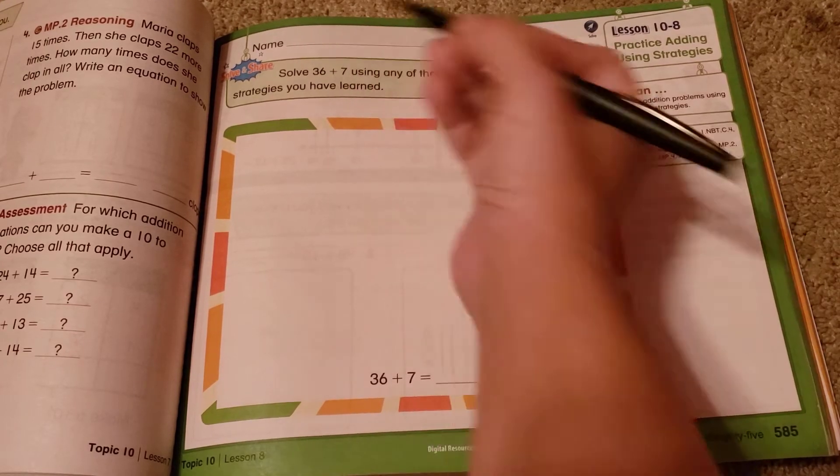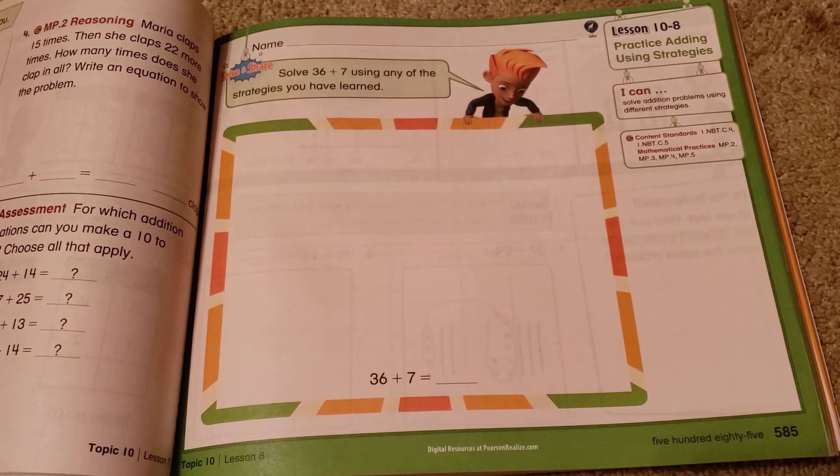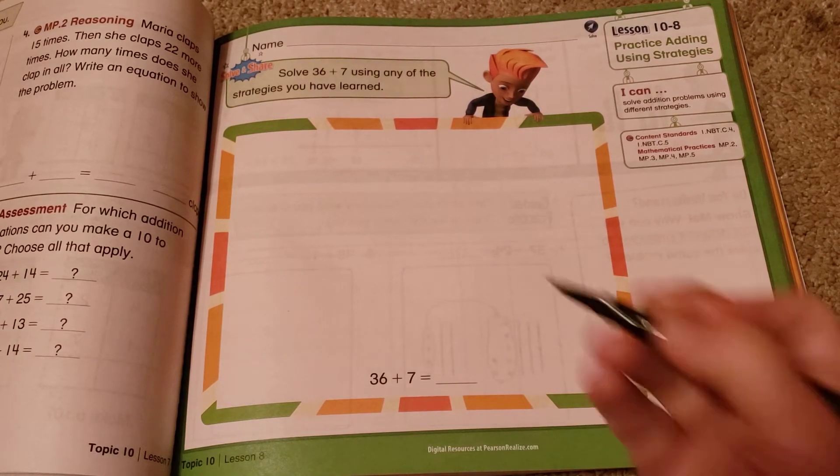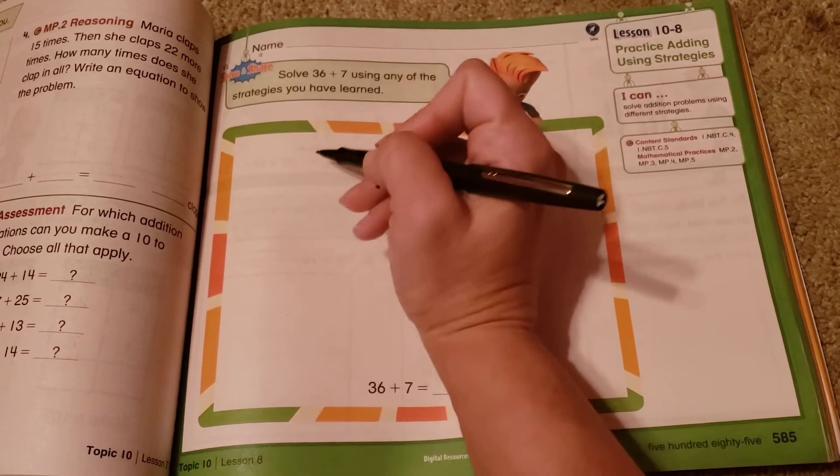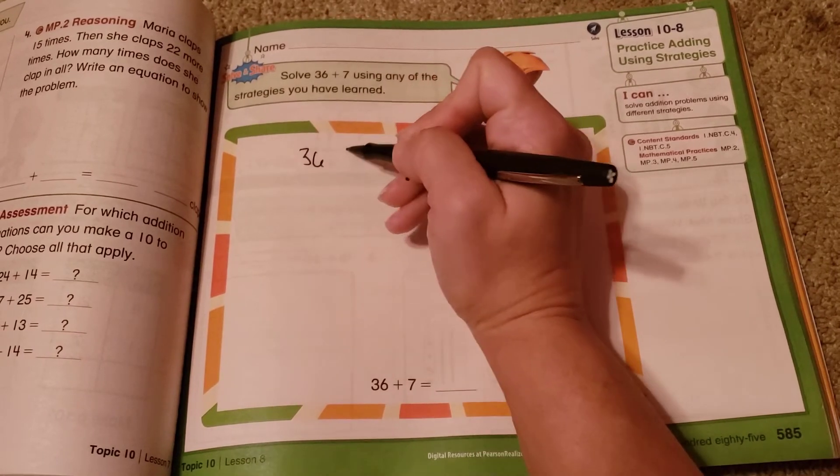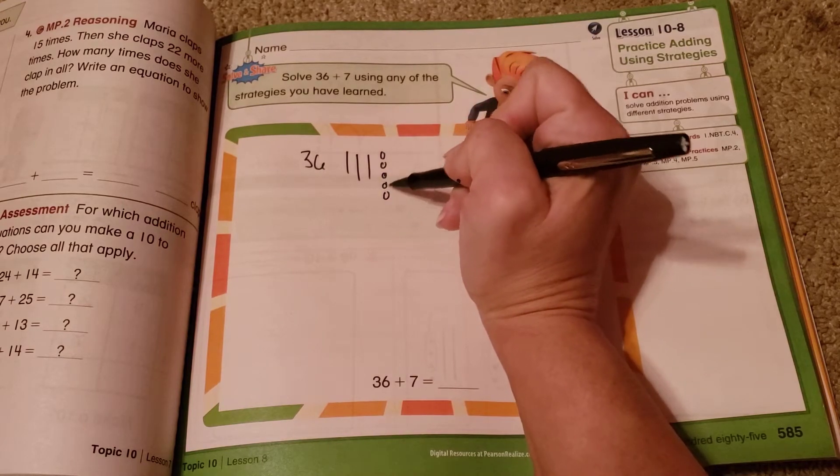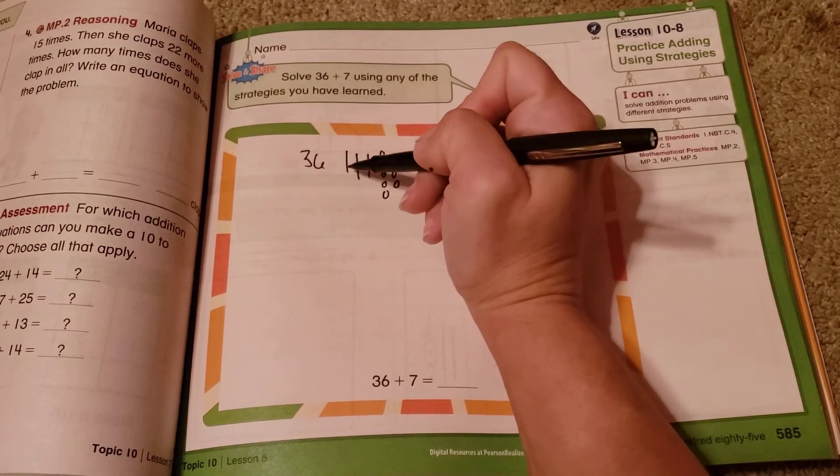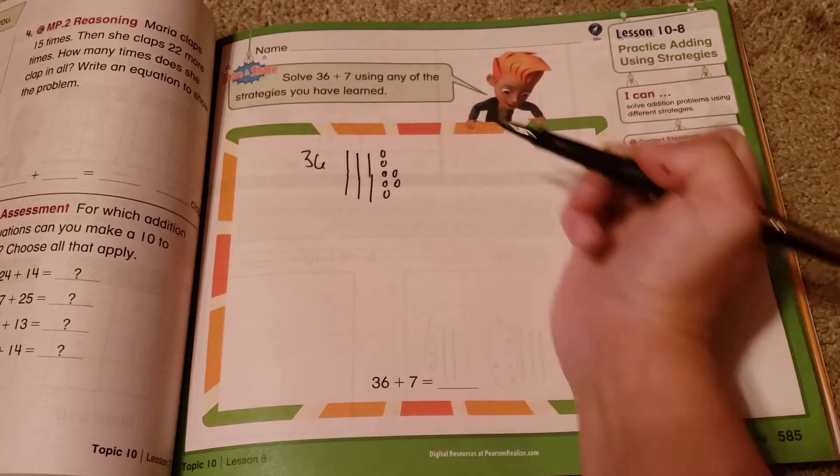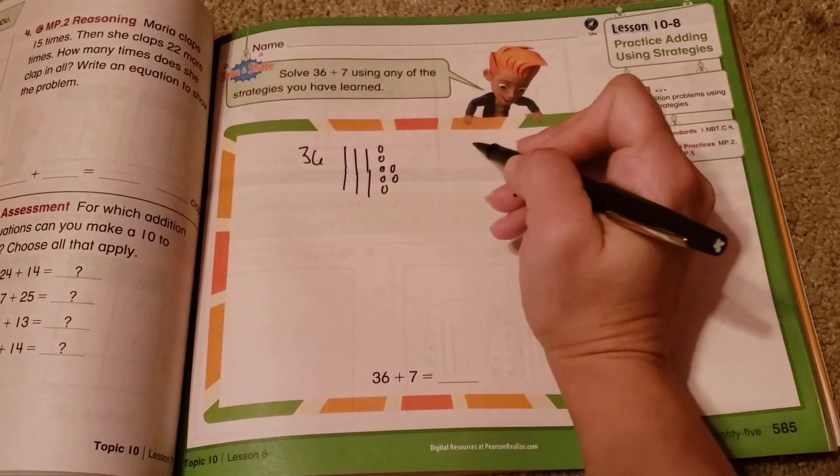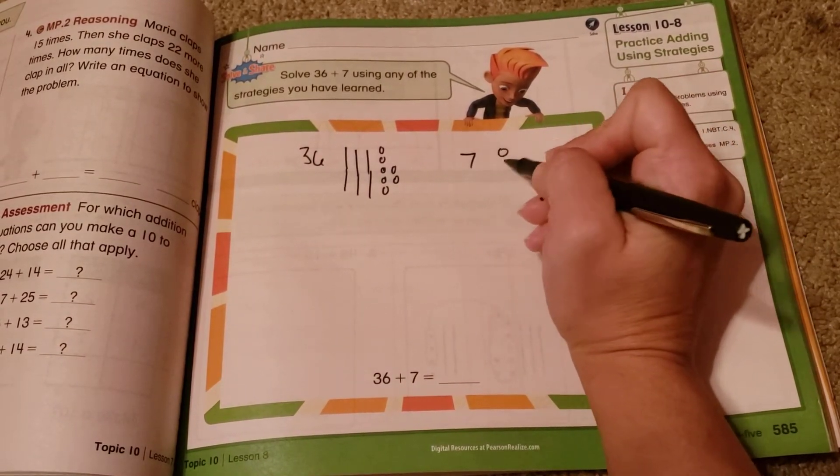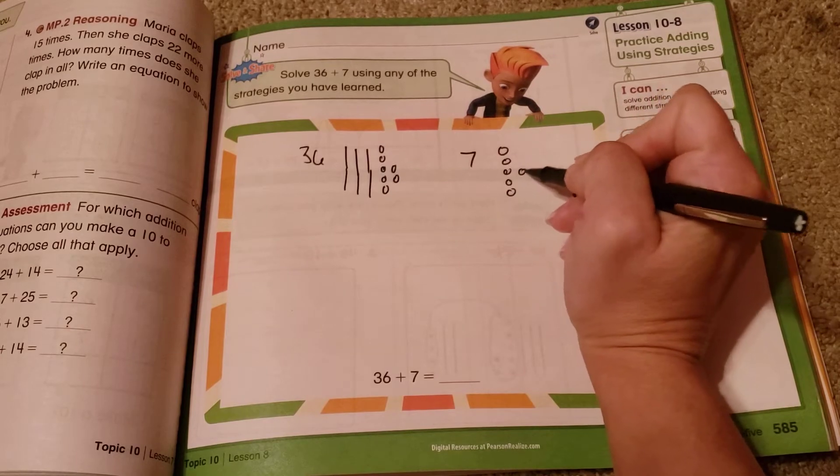So for this one, 36 plus 7, I can draw it out. So I'll show you what that one will look like. So I draw my 36, my three tens, and my seven ones. Let me make these tens a little bigger. Plus 7: 1, 2, 3, 4, 5, 6, 7.